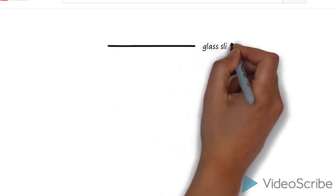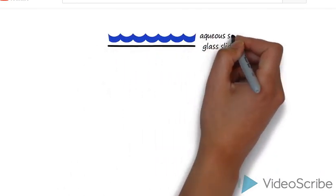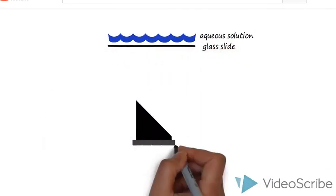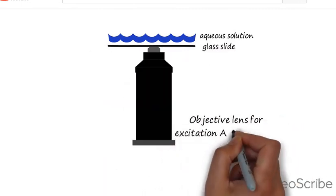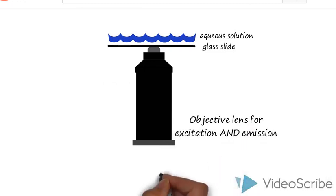Unlike P-TIRF, objective-based TIRF has the excitation and emission parts of the microscope situated on the same side of the sample. In fact, they share the same objective lens, which sits below the sample in an inverted configuration.